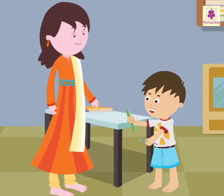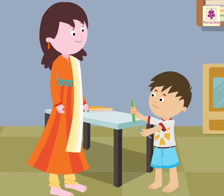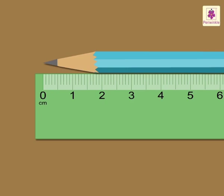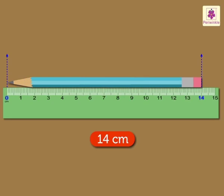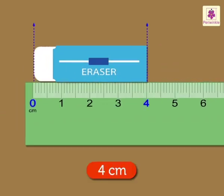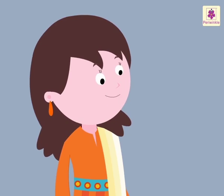Mom, can I measure the length of this pencil with this ruler? Yes, of course. Let me show you how. Keep the pencil on the table. Keep the ruler beside it. You have to take care that one end of the pencil coincides with the zero mark of the ruler. Now look at the other end of the pencil — which number does it coincide with on the ruler? 14. So its length is 14 centimetres. Correct. Now let's measure this eraser. I think it is 4 centimetres. Correct. Now you know how to measure the length of small objects.